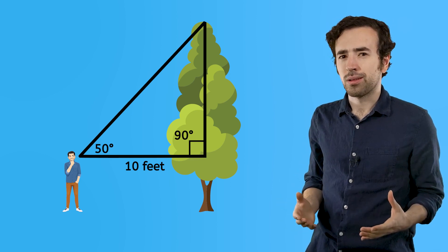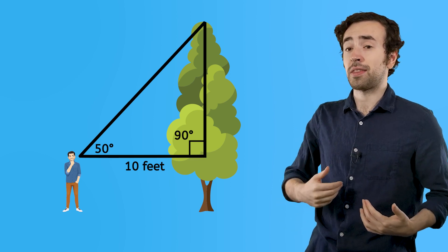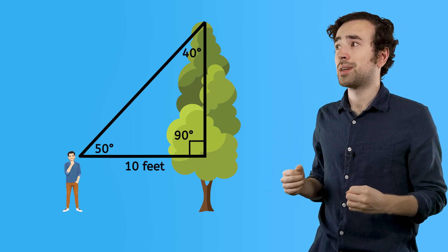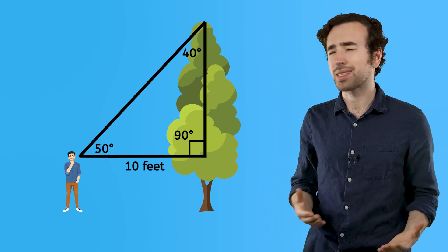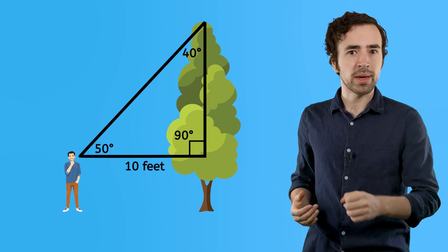But then what? I mean, I can use subtraction to find that the remaining angle is 40 degrees, but that still doesn't tell me anything about the side lengths, right? And then it hit me.